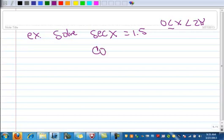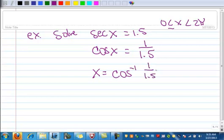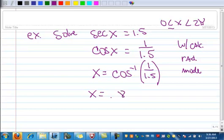So this says the cosine of x, that's going to be the reciprocal, so 1 over 1.5. And then we're going to change this to an inverse problem. So x is now going to be inverse cosine of 1 over 1.5. And so with your calculator in radian mode, go ahead and type this in, inverse cosine 1 over 1.5, and you get 0.8411. But we're not done.